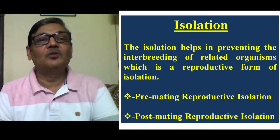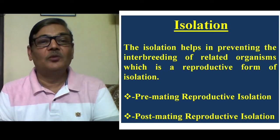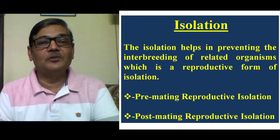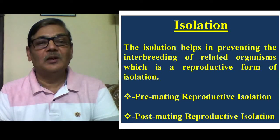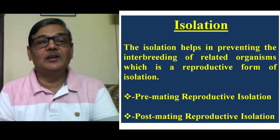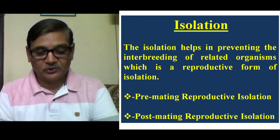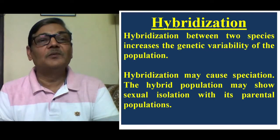The other factor could be isolation. Isolation helps in preventing the interbreeding of related organisms, which is a reproductive form of isolation. This could be premating reproductive isolation — occurring before mating — or it could be postmating reproductive isolation. There are a number of factors which cause reproductive isolation, because two species maintain their identity only because of reproductive isolation. They may mature at different periods of time, and the reproductive structures may vary in different species. They become separate species only because reproductive isolation gets established among them.